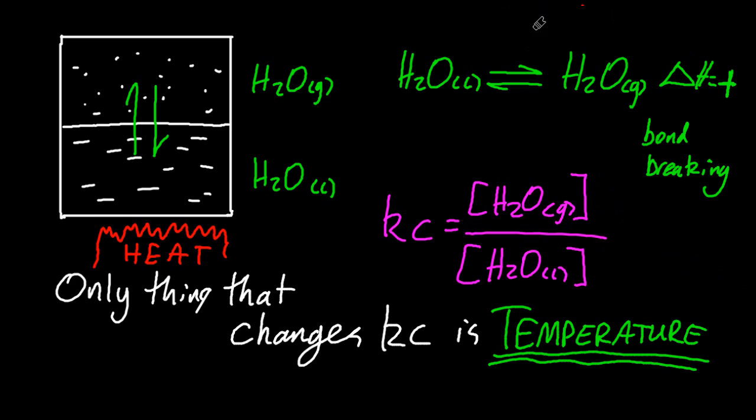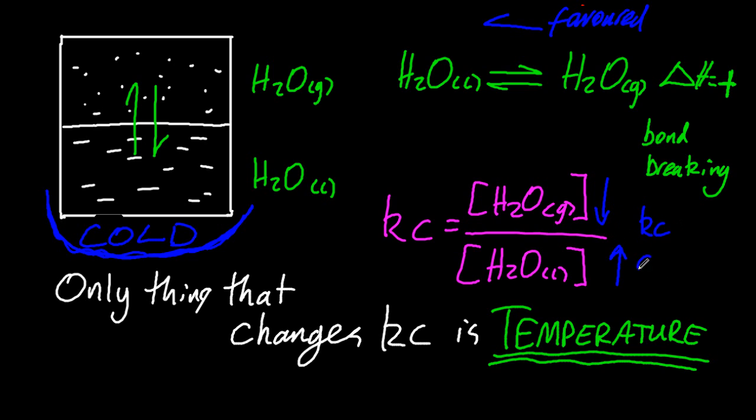So let's look at the contrary example. If I was to cool it down, then it will favor the exothermic side, stressing it by cooling it so it favors the exothermic side to oppose the stress. So there'll be less gas now and more water. So when it gets back to equilibrium again, the Kc will have decreased.